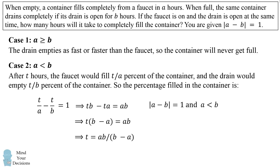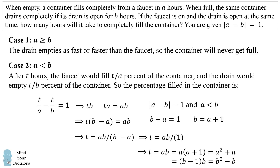Now we also know that the absolute difference of A and B is 1, and in this case A is less than B, so B minus A equals 1, or B equals A plus 1. Therefore the time equals AB divided by 1, which equals AB. This can also be written as A times (A plus 1), which equals A squared plus A; or as (B minus 1) times B, which equals B squared minus B; or we can just leave it as A times B.